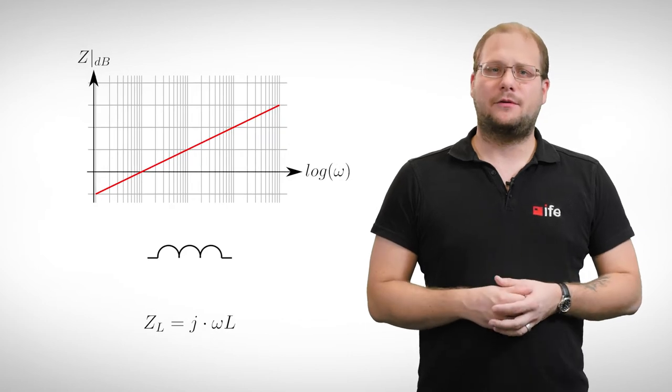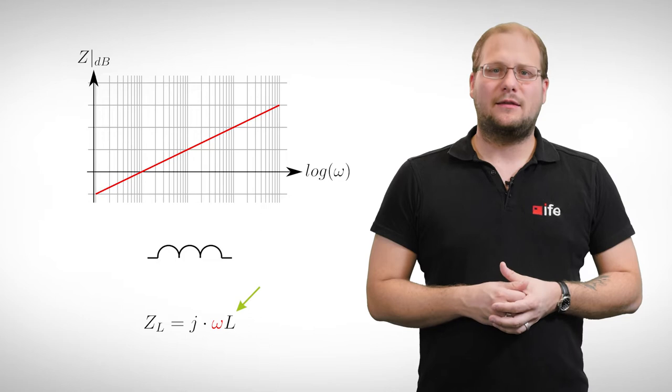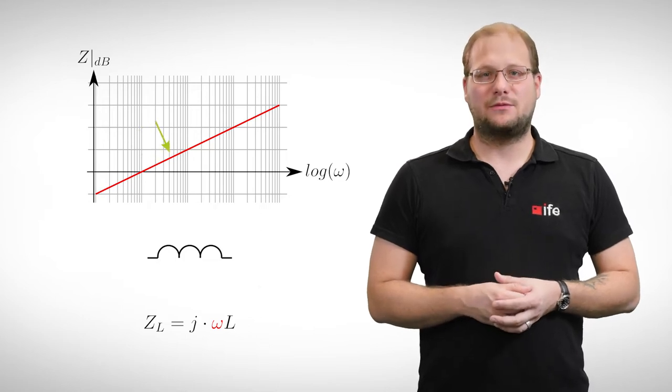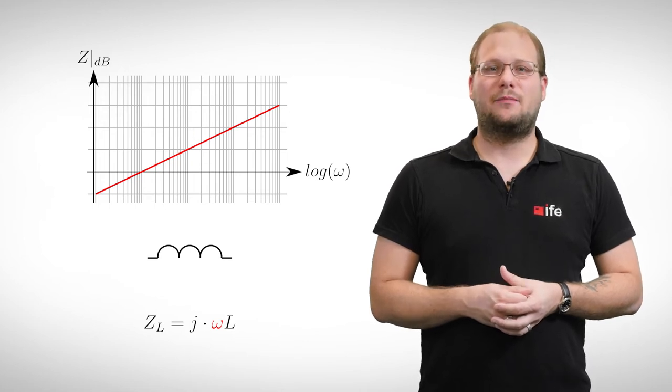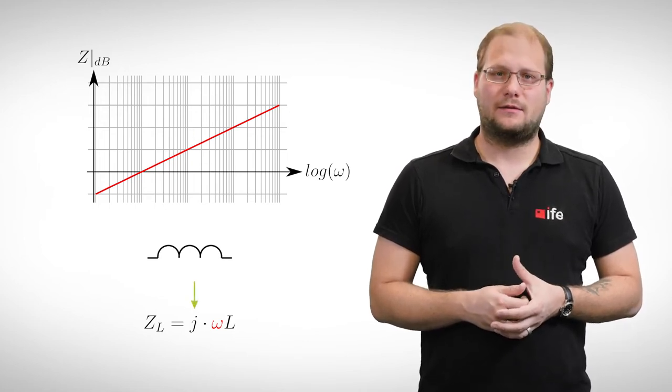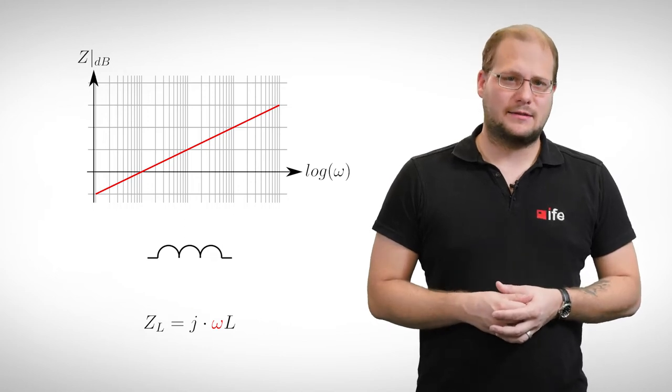For the inductor, the impedance is calculated by omega times L. Therefore, its impedance rises with frequency. The phase shift of the two elements is indicated by the imaginary unit j. An ideal imaginary impedance is called reactance. In case of ideal components, the reactance of a capacitor and an inductor have different signs.